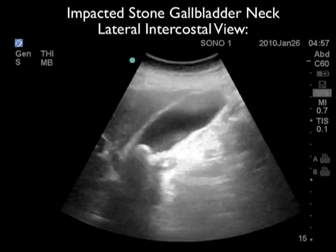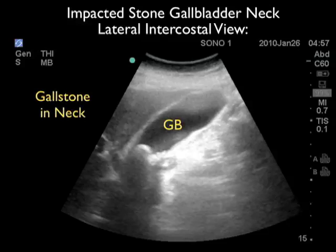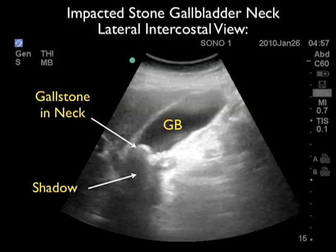Here's a still image showing the classic appearance of an impacted stone at the gallbladder neck. We're looking through the lateral intercostal view, giving a nice long axis view of the gallbladder. We can see a gallstone located within the neck of the gallbladder with the classic bright or hyperechoic appearance, and the hard shadow — the blackout of sound waves — posterior to the gallstone. Interestingly, as we rolled the patient around and inspected the gallstone, it failed to move, showing that it was impacted and the cause of the patient's biliary colic.